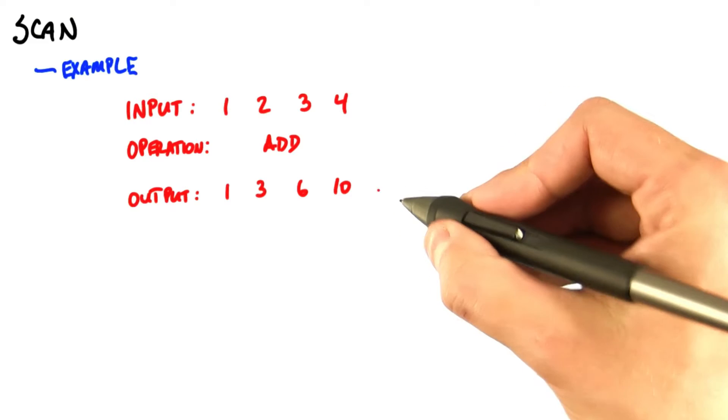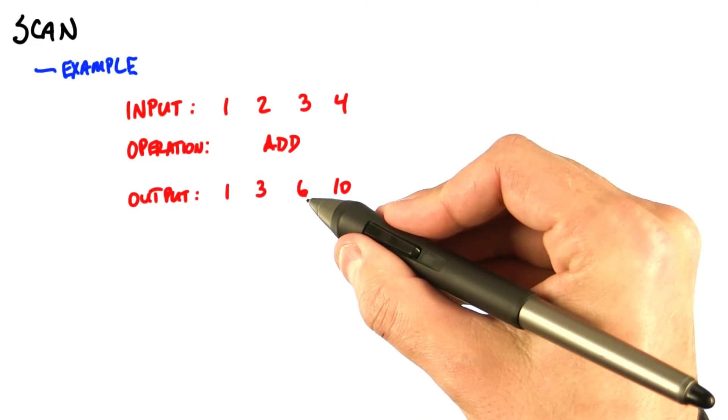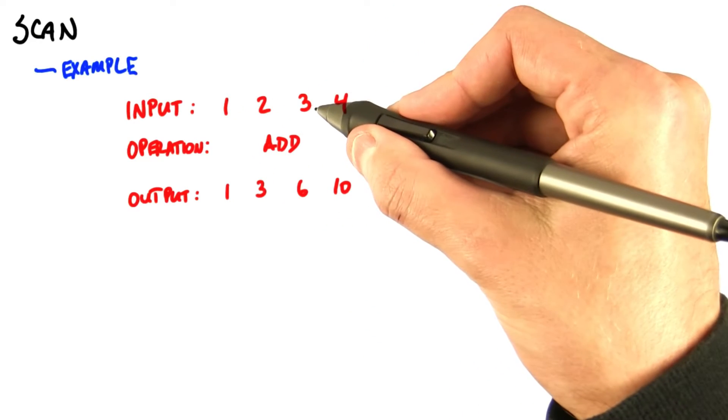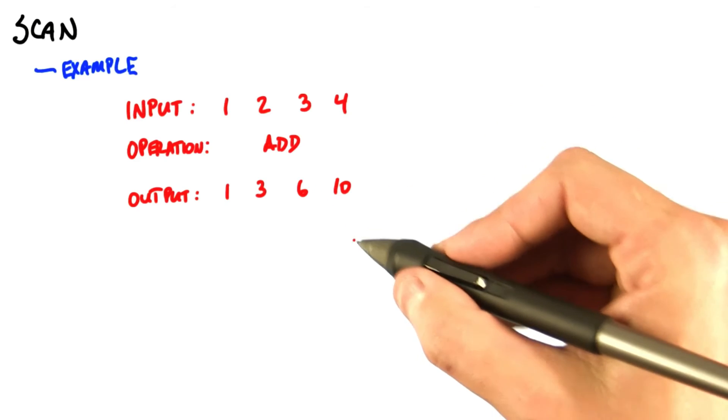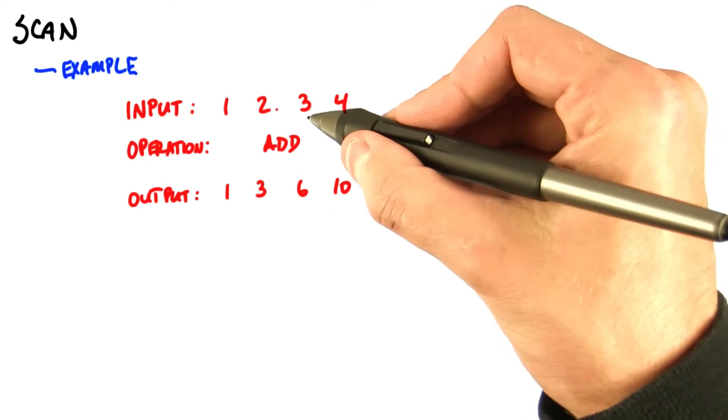And the output is the running sum of those numbers. So each output is the sum of all the numbers in the input up to that given point. 6 is the sum of 1, 2, and 3.